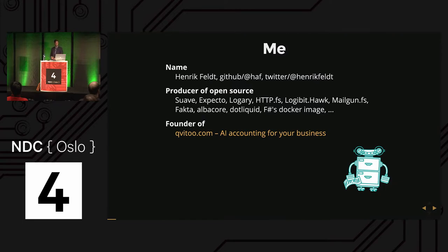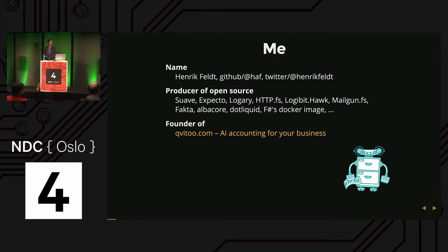Other projects include Expecto, a testing framework; logging and metrics for .NET, F# and C#; HTTPFS, a wrapper around HTTP web request; some minor libraries for talking to console, a key-value store, building with Ruby on .NET, AlbaCore, etc. I'm also running a startup called Kvitu — Kvitu.com is trying to automate bookkeeping for everyone to make it really easy to run your own business. That's what I've been doing the last three years, and we have Rasmus here with us today.